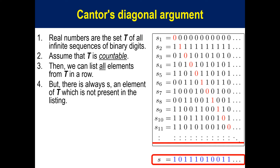But there is always s, an element of T, which is not present in the listing. S is constructed by choosing the i-th digit complementary to the i-th digit in s_i, which will correspond to no s_i in the listing. For example, the first digit in s₁ is 0. Thus, let the first digit of s be 1, which is complementary to 0.